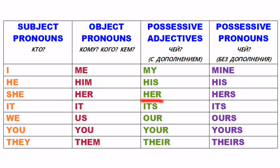Теперь her — тут вообще легко. Her не меняется: и во второй, и в третьей колонке — her. Чтобы сказать «её книга» — her book. Чтобы сказать «его» или «её» для не-людей, например, «это её тарелка» (про собаку) — мы скажем its. Its plate — «её тарелка». Чтобы сказать «наше» — our. Чтобы сказать «ваше» — your. Чтобы сказать «их» — their. Например, «их дом» — their house.